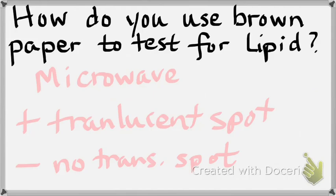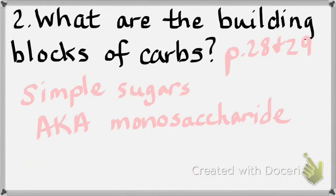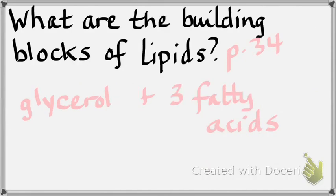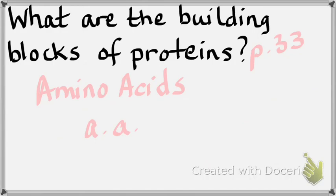The building blocks of lipids are glycerol and three fatty acids. Glycerol and three fatty acids. And the building blocks of proteins? Amino acids. Page 33 is a good reference page for the building blocks of proteins.